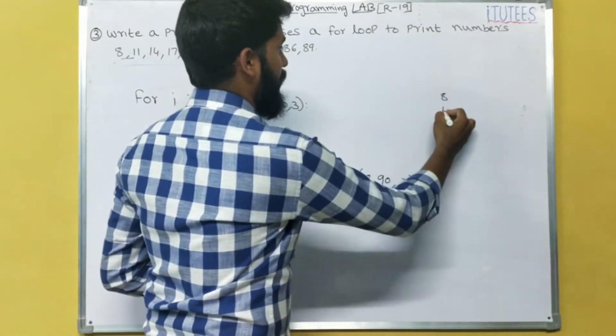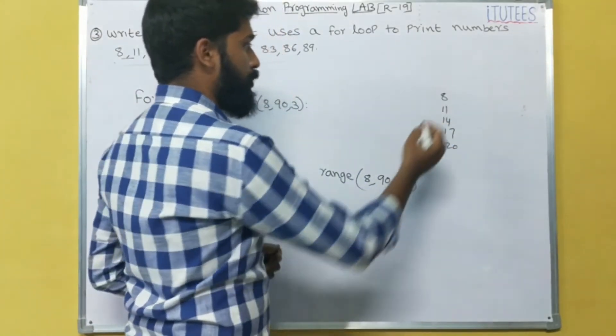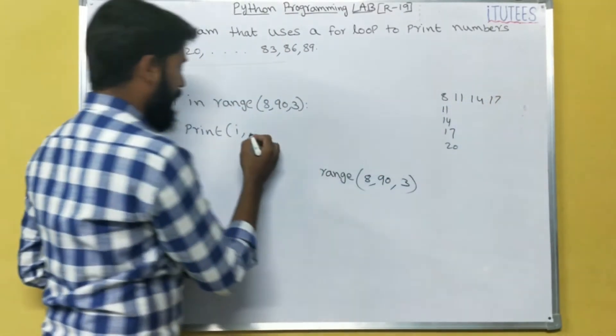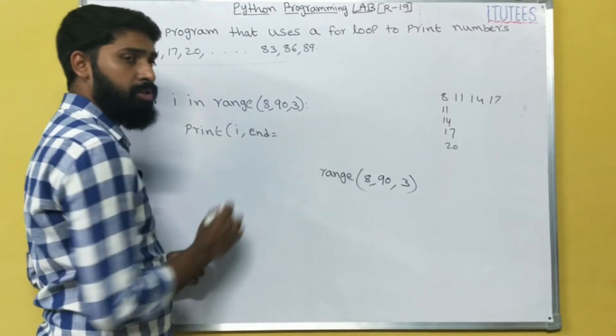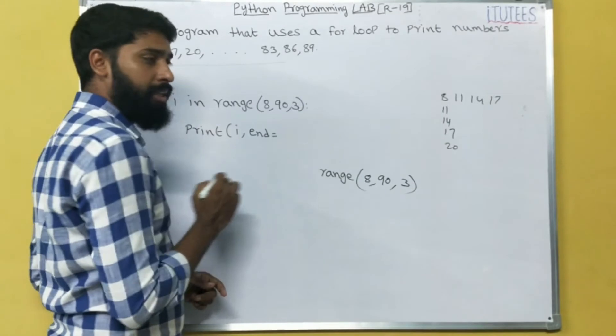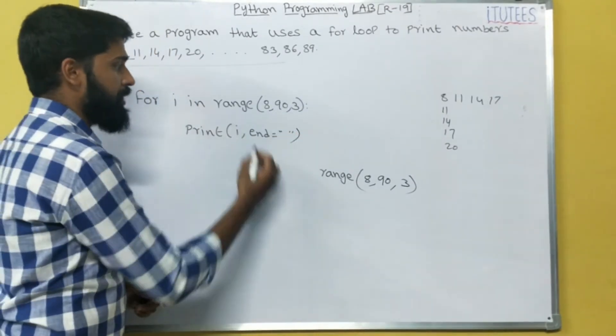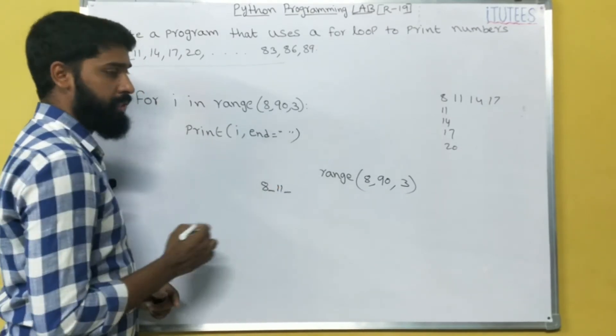If I print I, it prints like this: 8, 11, 14, 17, 20. I want to print in the same line, like this. Then I can write comma, end equals to. So normally the end is new line, but here end equals to, I give one space. That's it. Now it prints 8 space, next one 11 space, like that.